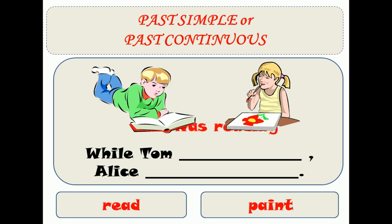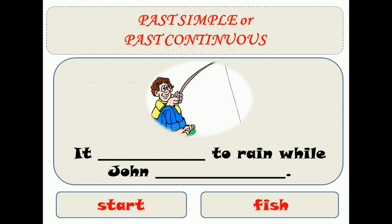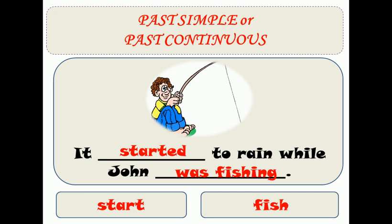While Tom was reading, Alice was painting. As you can see, we have two long actions happening at the same time. So we have two long actions at the same time. It started to rain while John was fishing — John was fishing and suddenly it started to rain.